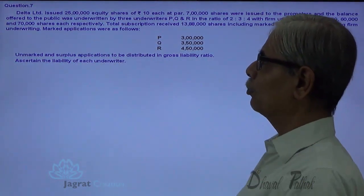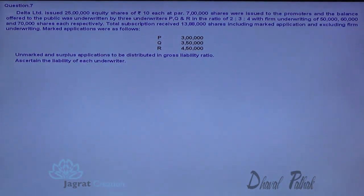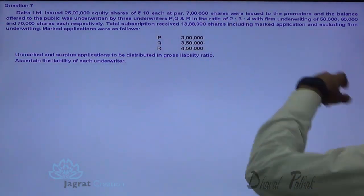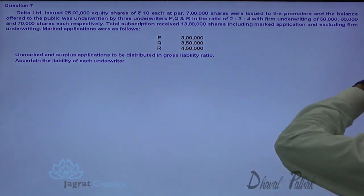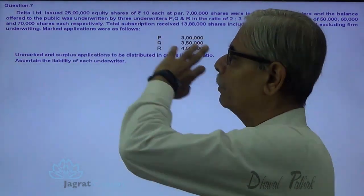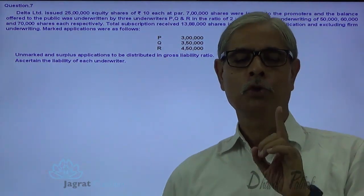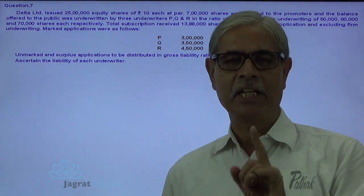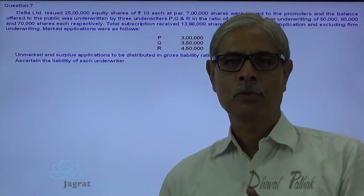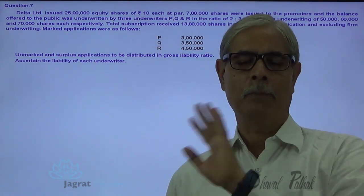Delta Limited issued 25 lakhs equity shares of rupees 10 each at par. 7 lakhs shares were issued to the promoters and the balance were offered to the public. Remember, no underwriting commission can ever be paid for the shares issued to promoters.